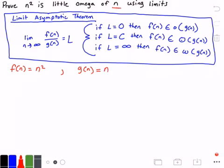Now we've identified both functions, so let's take the limit of f(n) divided by g(n) as n approaches infinity to figure out this problem. I'm going to rewrite the limit theorem.